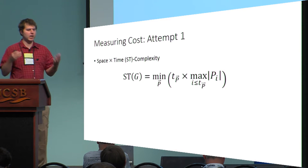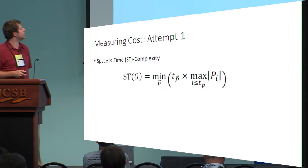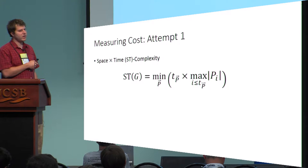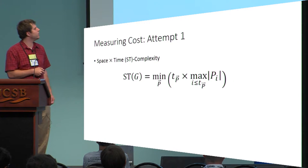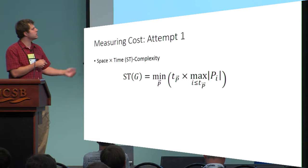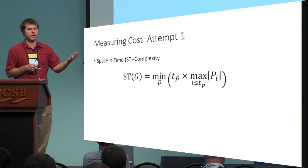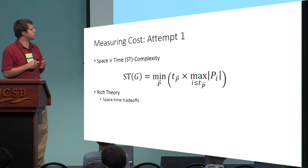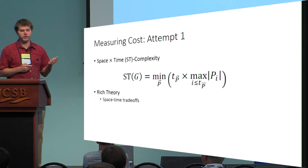How do we measure the cost of a pebbling algorithm? The first approach — the classical approach — is space-time complexity. The space-time complexity of a graph is the minimum over all legal pebblings of the time that the pebbling takes (the number of rounds) times the maximum space usage (the maximum number of pebbles on the graph at any point in time). This is a nice notion with a rich theory and lots of space-time trade-off theorems, but I claim that this is not the appropriate metric for password hashing.